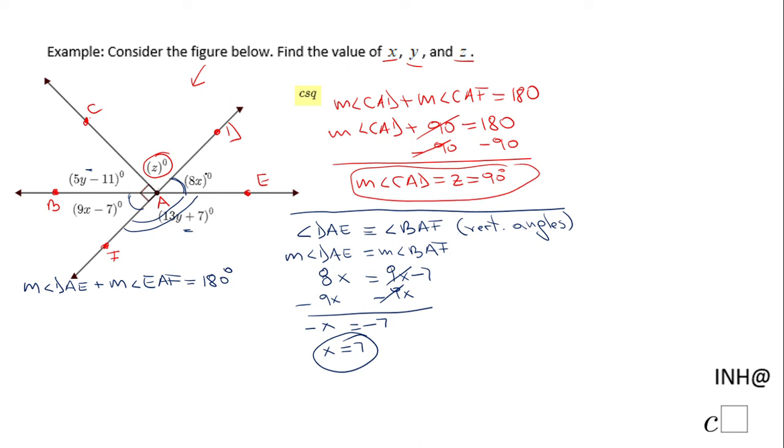But first of all, I really need to find how much this angle is. We have an expression 8x and that is the angle DAE. The measure of angle DAE is 8x, so it's going to be 8 times 7 and that will be 56 degrees.